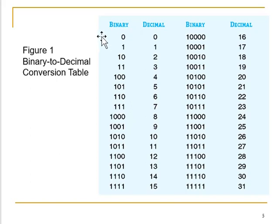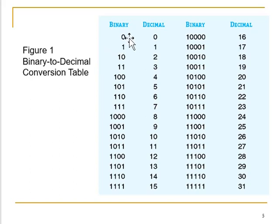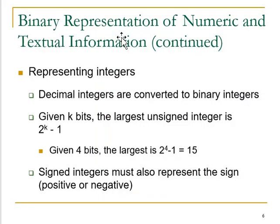When representing 0 in terms of a 4-bit number, it is represented in binary as four zeros. If representing binary 0 in terms of 5 bits, then it is going to be all five zeros. Continuing with the representation of integers — decimal integers are basically converted into binary integers, and we can represent the largest unsigned integer as 2 to the power k minus 1, where k corresponds to the number of bits.